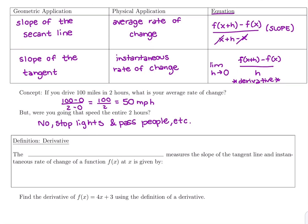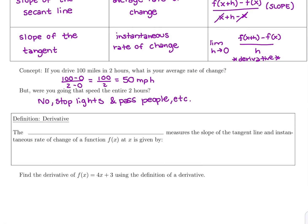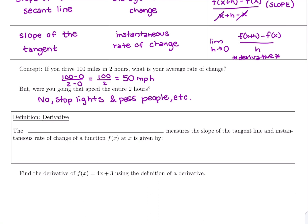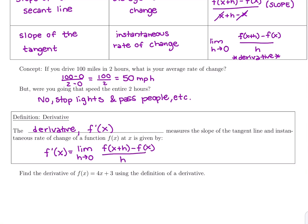This is where the concept of the derivative comes from — it's instantaneous rate of change, that second formula. The derivative, normally labeled f prime of x, measures the slope of the tangent line or instantaneous rate of change of a function f(x), and is given by the formula: f prime of x equals the limit as h goes to zero of f(x+h) minus f(x) all over h.